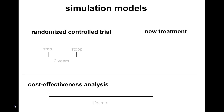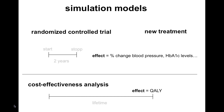Secondly, the effect outcome in randomized controlled trials is what is called a surrogate outcome — for example, effect on blood pressure or blood lipid levels. Whereas in cost-effectiveness analysis, we want to have the effect measured in QALYs. To come around these problems, simulation models with risk equations and extrapolations of data are used.